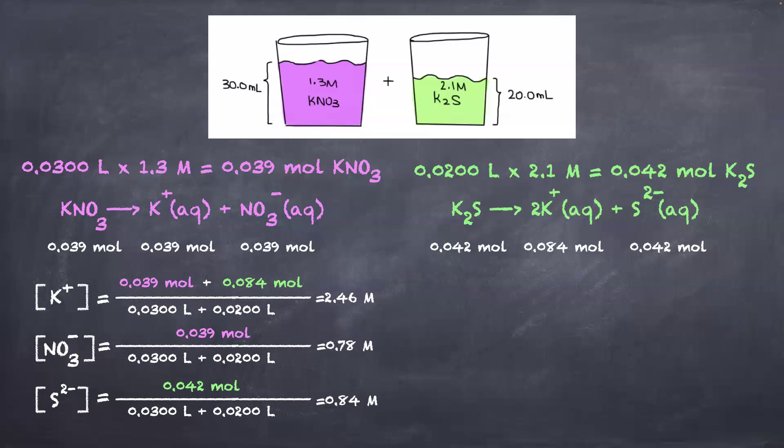So that was method one. In this method, we found the moles of each salt, then the moles of each ion, and finally the concentration of each ion by dividing the moles by the total volume.